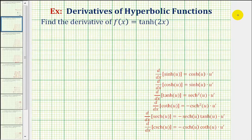Now we'll take a look at two examples of determining the derivatives of hyperbolic functions that require the chain rule. We first want to find the derivative of f of x equals hyperbolic tangent of two x. The first step is to recognize that we have a composite function where the inner function is equal to two x, so we'll have to apply the chain rule in order to find this derivative.